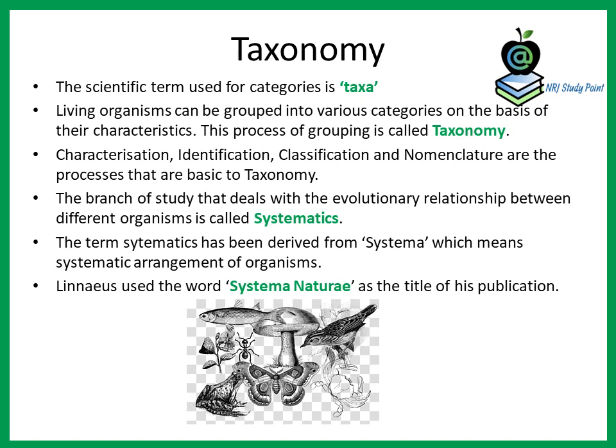Characterization means when you see an organism, you find out some easily observable characters — that is characterization. The next process is identification — you identify an organism and mark some identification features so you can recognize it anywhere. The third process is classification — you classify the organism into different groups on the basis of the characters you observed. And then you give it a name — that is nomenclature.